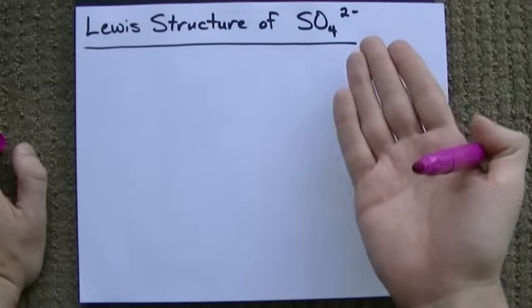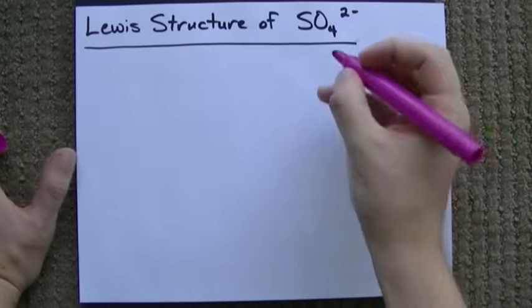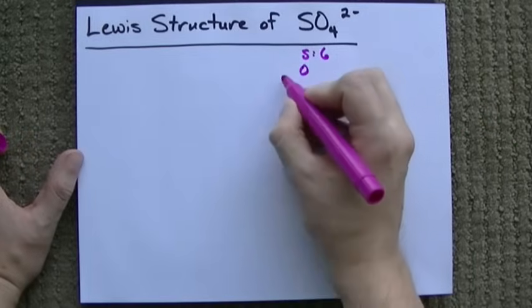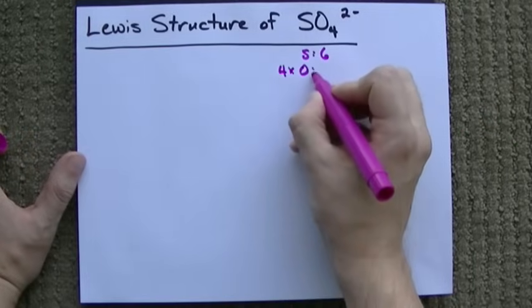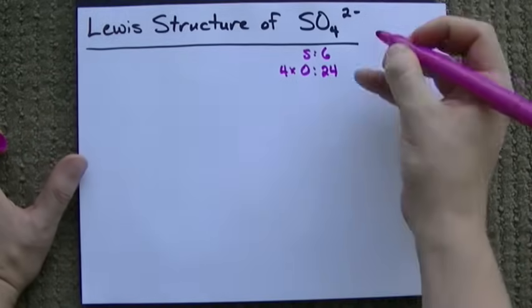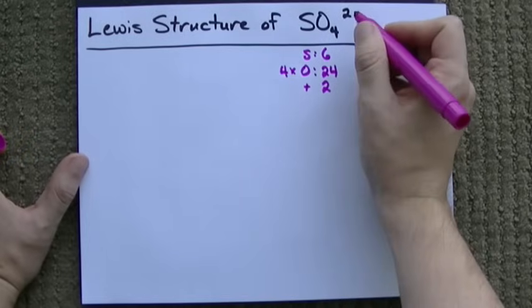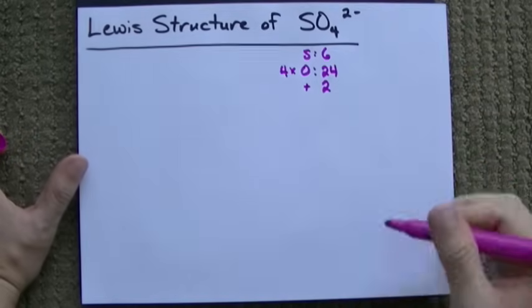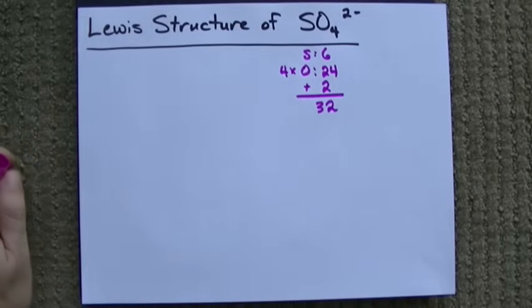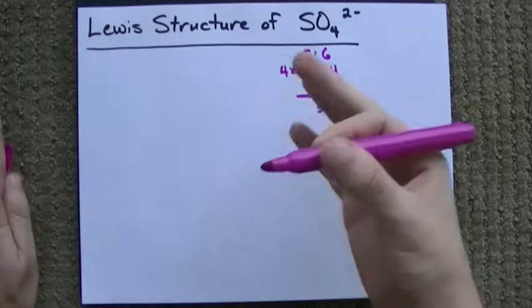Do you guys remember how to create Lewis structures? Step 1 is to count the number of valence electrons. Each sulfur brings 6 valence electrons with it. Each oxygen brings 6 with it, so that's 24 total. And we have to add another 2 because we have a negative 2 charge. That means we have 2 extra electrons. When we add those up, we get 32 electrons, and now we need to draw the actual structure and put 32 electrons in somehow.